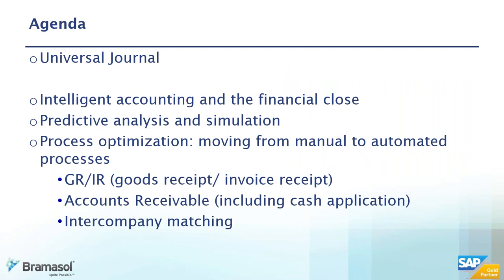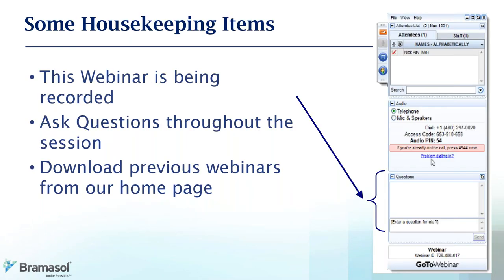Today we're going to talk about the Universal Journal, Intelligent Accounting and the Financial Close, Predictive Analyses and Simulation, Process Optimization, Moving from Manual to Automated Processes, and GRIR Accounts Receivable Intercompany Matching. What I think you're really going to enjoy is the back and forth between Birgit and Julio, talking about the perspective of the user — Julio from the controller's perspective, and Birgit explaining how SAP solves those problems. A reminder that this webinar is being recorded and I encourage you all to ask questions throughout the session.